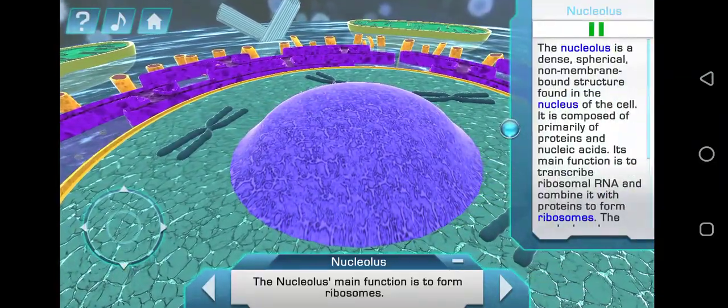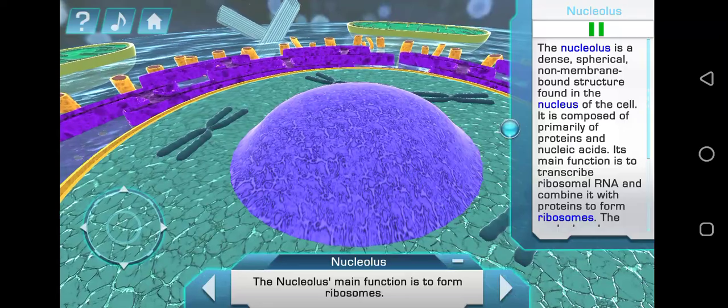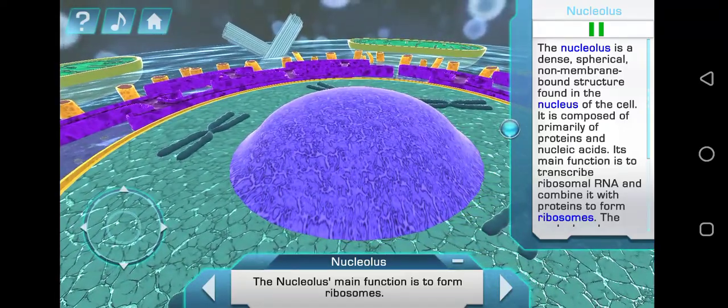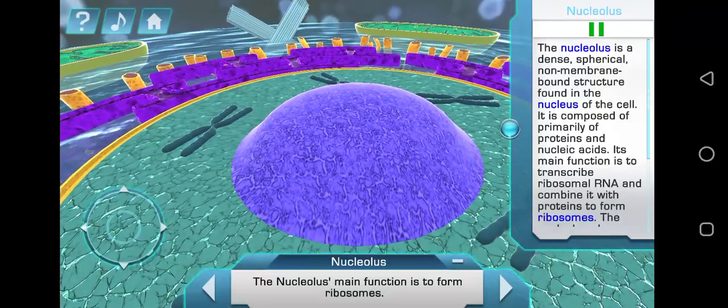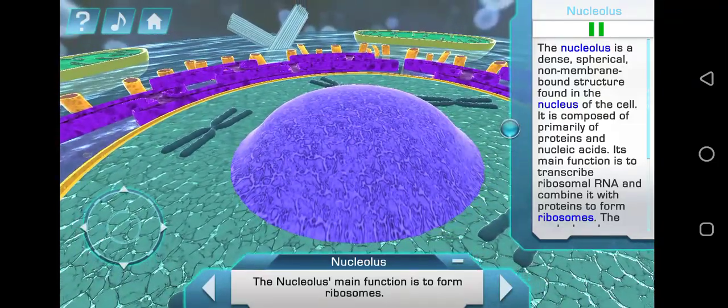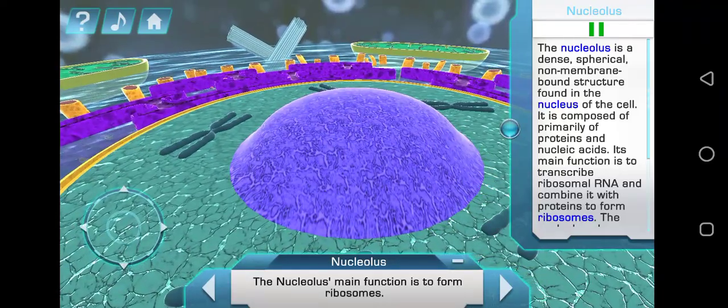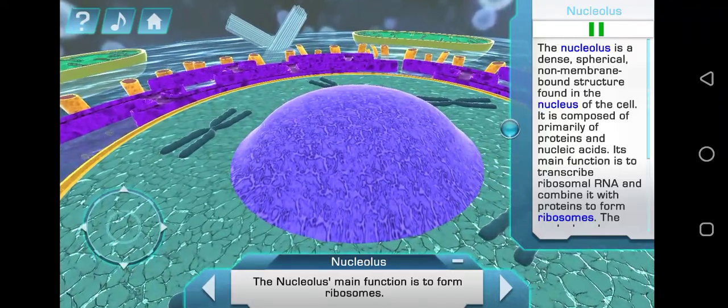The nucleolus is a dense, spherical, non-membrane bound structure found in the nucleus of the cell. It's composed primarily of proteins and nucleic acids. Its main function is to transcribe ribosomal RNA and combine it with proteins to form ribosomes.